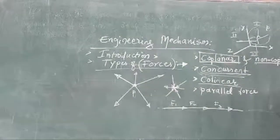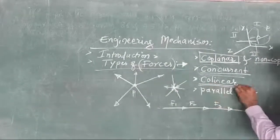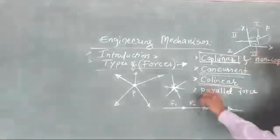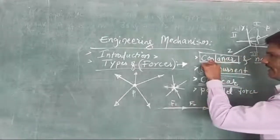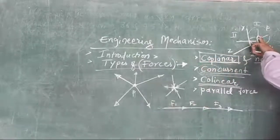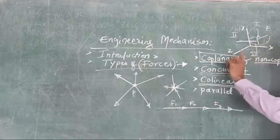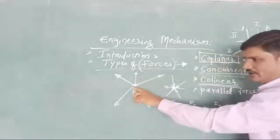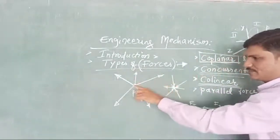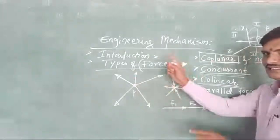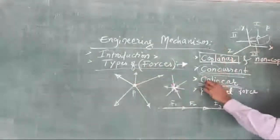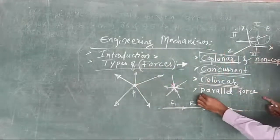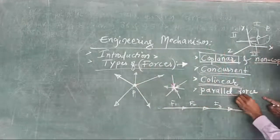So co-linear forces: moving in the same path. Co-planar: acting on the same plane. Concurrent: meeting at the same point, or originating from the same point. Such type of forces we call accordingly. Then the last one — that is parallel.